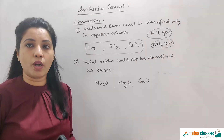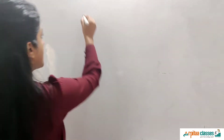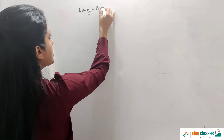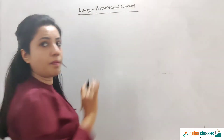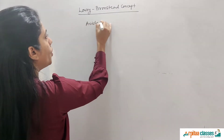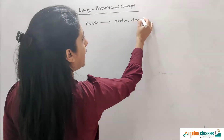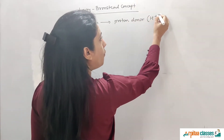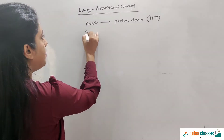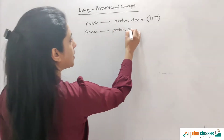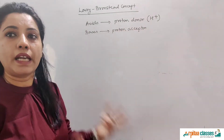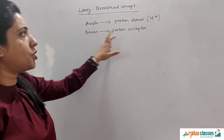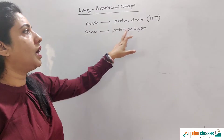Now we are going to study the Bronsted-Lowry concept of acids and bases. This very important concept says that acids are proton donors — any substance which has the capability of donating H⁺ is an acid — and bases are proton acceptors — any substance which has the capability of accepting a proton is a base.